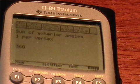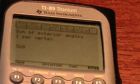And this is the answer to our question. The sum of the exterior angles, 1 per vertex, is 360 degrees.